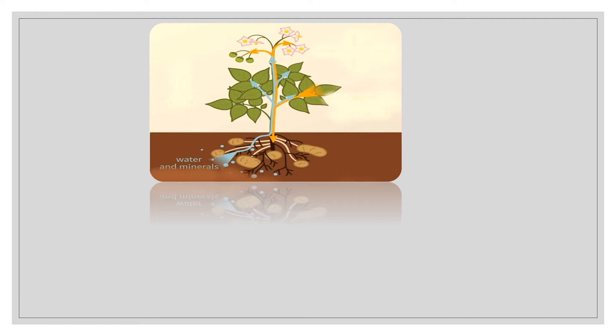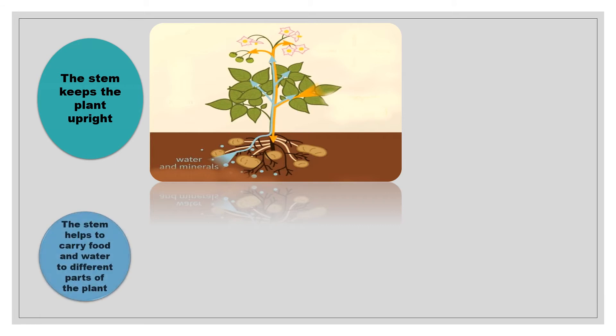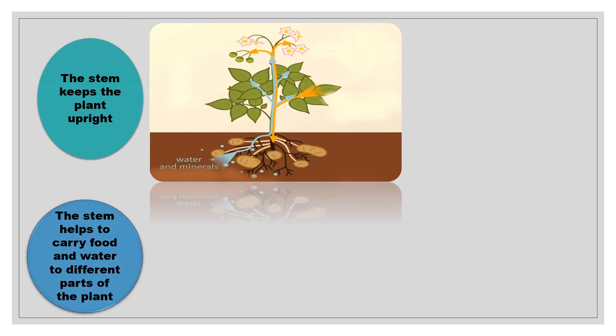Imagine what will happen if there is no stem. Yes, the stem helps to keep the plant upright. We have already learned that the root absorbs water and minerals from the soil. These water and minerals are carried to different parts of the plant by the stem.